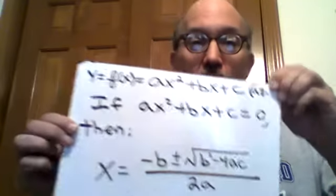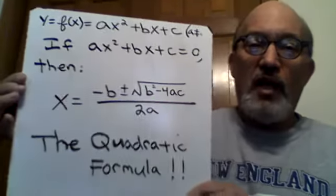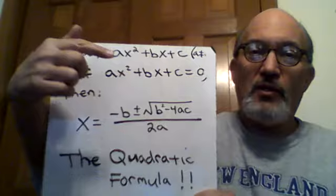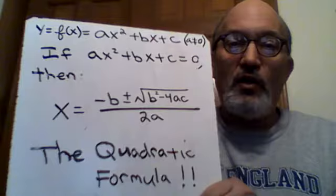We're now going to find the two x-intercepts of the graph of this function by use of the famous quadratic formula. Our standard form quadratic function is ax squared plus bx plus c. And of course we say that a cannot be zero because if a were zero then it wouldn't be quadratic. If a were zero you wouldn't have the x squared term. So that's the standard form quadratic function.